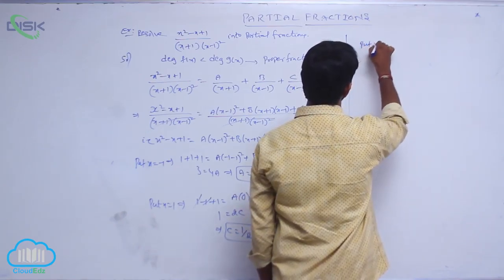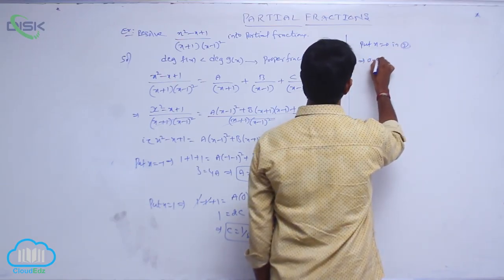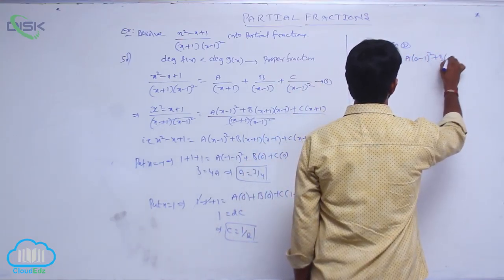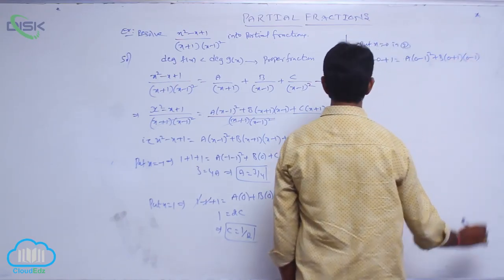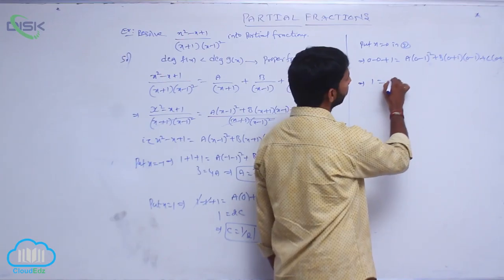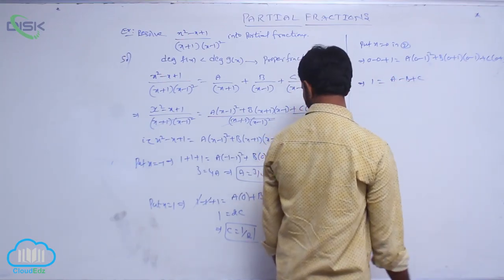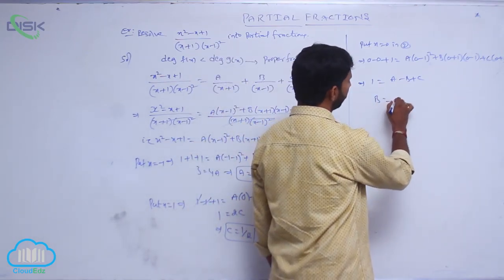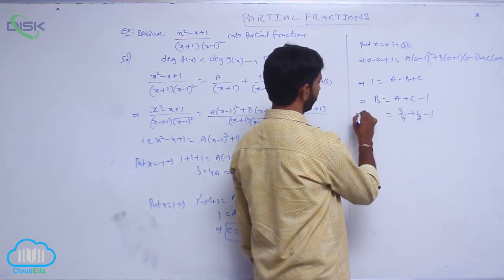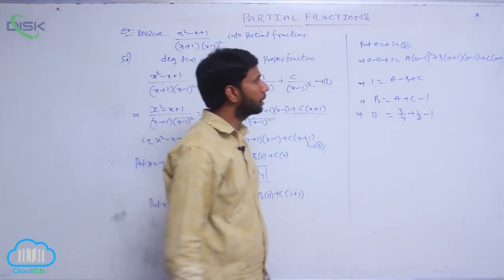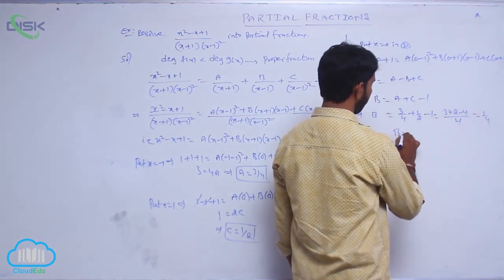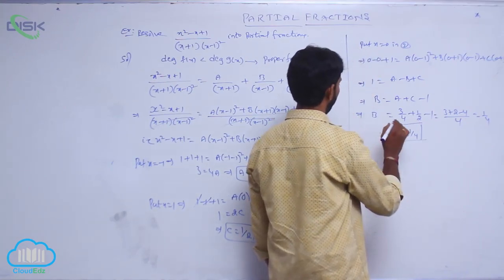Now substitute x equal to 0 in condition number 2: 1 equals A of 0 minus 1 whole square plus B of 0 plus 1 into 0 minus 1 plus C of 0 plus 1, giving 1 equals A minus B plus C. So B equals A plus C minus 1 equals 3 by 4 plus 1 by 2 minus 1. Taking LCM: 3 plus 2 minus 4 all over 4 equals 1 by 4. Therefore B equals 1 by 4.